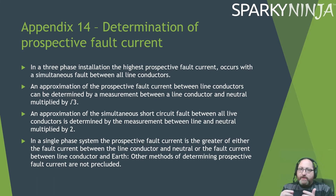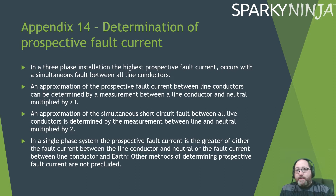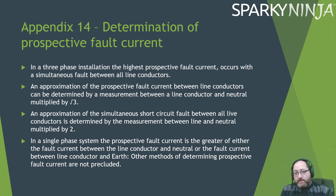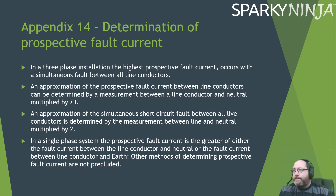Regarding appendix 14, they've taken out the calculation where measured Zs must be less than or equal to 0.8 × U/Z (the calculated value of fault impedance), but they've kept in the determination of prospective fault current. They've added content mentioning that with three-phase systems the prospective fault current is highest between line conductors. An approximation of the prospective fault current between line conductors can be determined by measuring line-to-neutral and multiplying by the square root of three (1.732). The simultaneous short-circuit fault is still multiplied by a factor of two, which is the common method for three-phase prospective fault current.